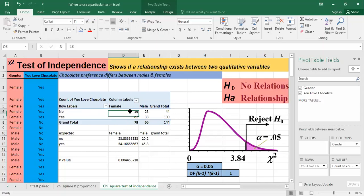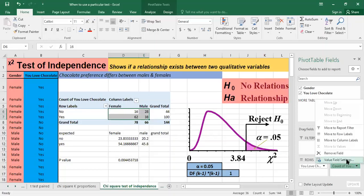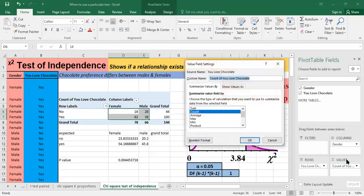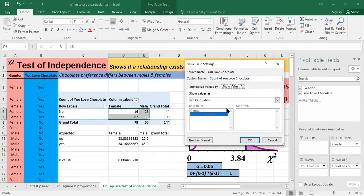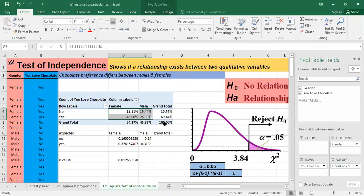So here in order to better see the results, we can move here to value field settings to see the percentages, the percentage of grand total.